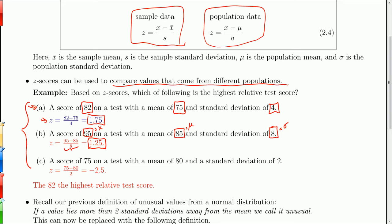Then we look at another test, a 75, on a test with a mean score of 80, standard deviation of two. We plug that into our formula, z equals x minus mu over sigma, and we get a negative 2.5.